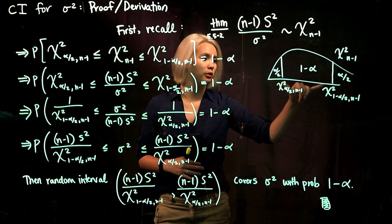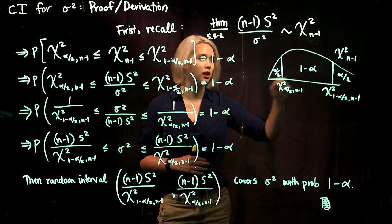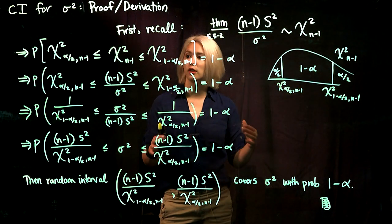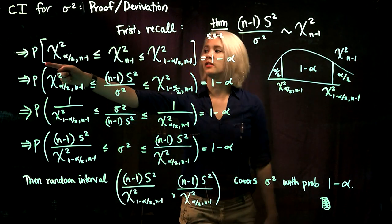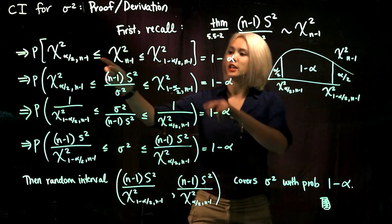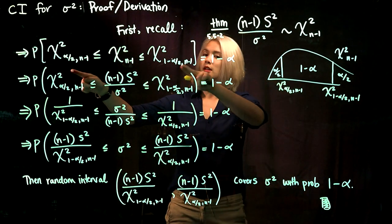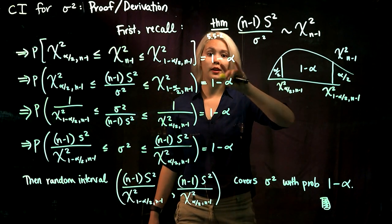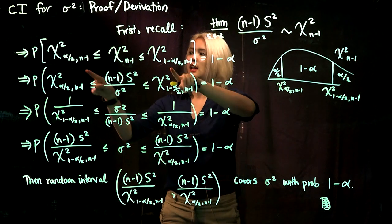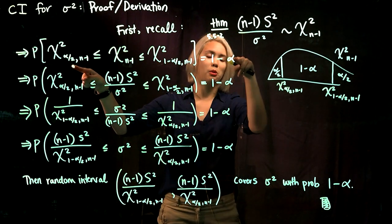We have these two quantiles specifically selected so that we have 1 minus alpha in the middle and alpha over 2 in each tail when we have a chi-squared distribution with n minus 1 degrees of freedom. Therefore, we definitely know that the probability that a chi-squared n minus 1 random variable falls between these two quantiles is 1 minus alpha — we've particularly chosen these quantiles so that this probability would be true.